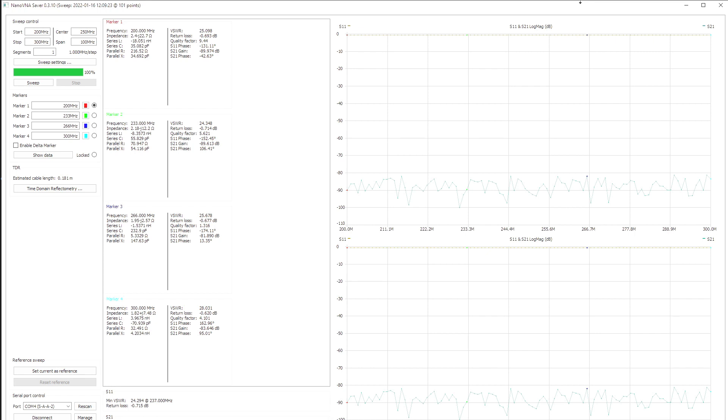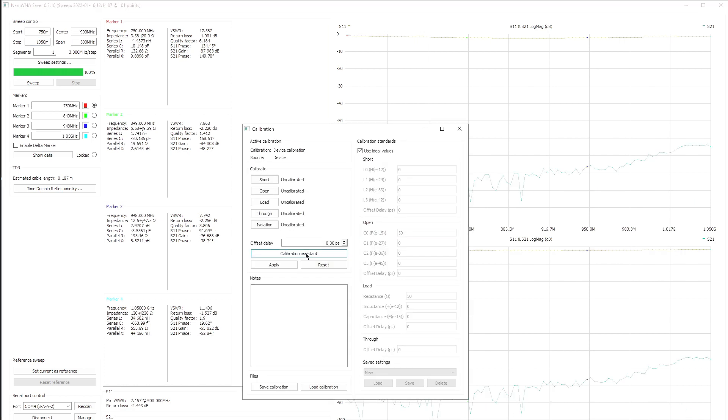My NanoVNA is connected to the computer. Before anything else, we have to do a calibration. First of all, we choose the right frequencies - let's say 550 MHz to 1050 MHz. Calibration assistant will help me better.